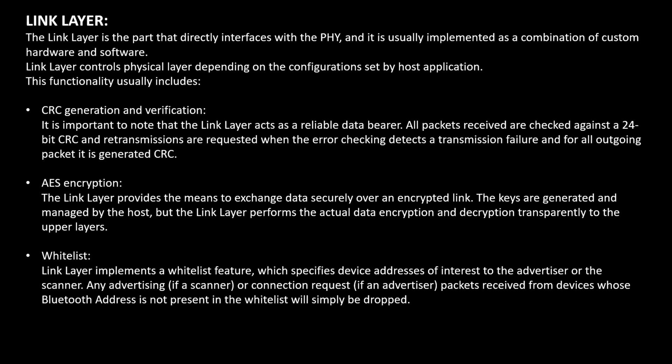One functionality of the link layer is CRC generation and verification. Whenever a packet is received, a 24-bit CRC is checked at the link layer; if correct, the packet is processed further, otherwise no acknowledgement is sent. For outgoing data, the link layer generates a CRC for the packet. The second functionality is AES encryption — encryption is done at the link layer but the keys are generated by the Security Manager Protocol, and it also performs decryption of all received data. The third functionality is the whitelist: if you want to connect to a specific device, the host provides a Bluetooth address to the link layer, and only connection requests from that address are accepted.